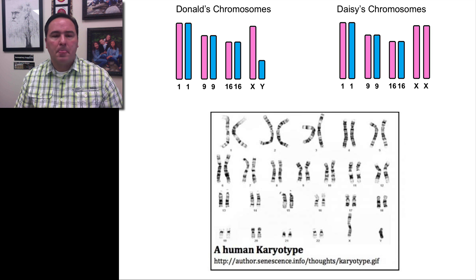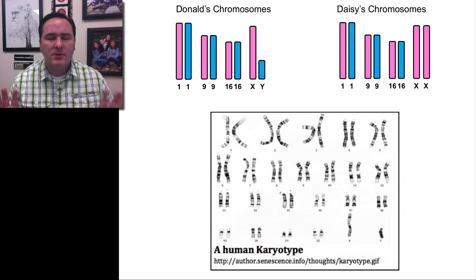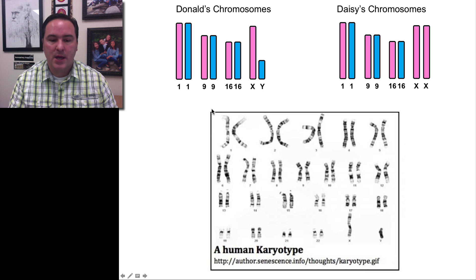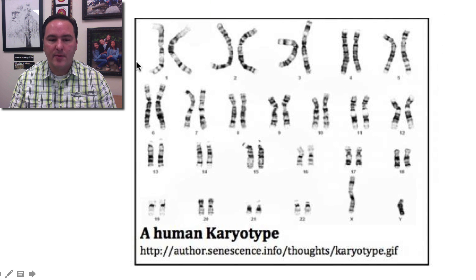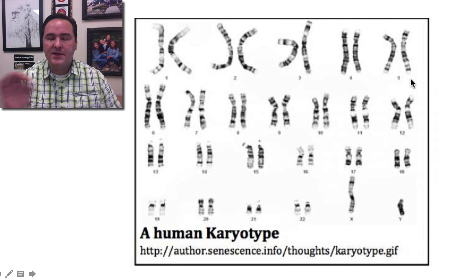So let's figure out how he might reason through this. What we're going to do is look at the chromosomes from both Donald and Daisy — only four pairs of chromosomes. Below we have what's called a karyotype, where you can see all 23 pairs with their stained banding patterns, which are a crude representation of the underlying genetic code.